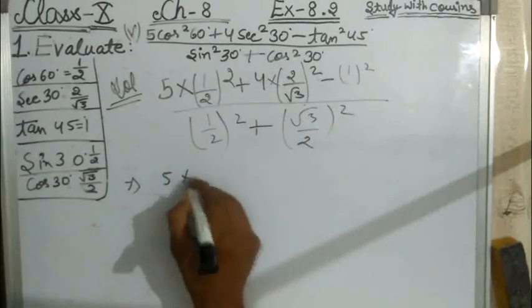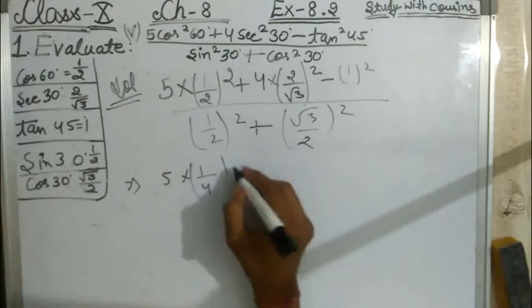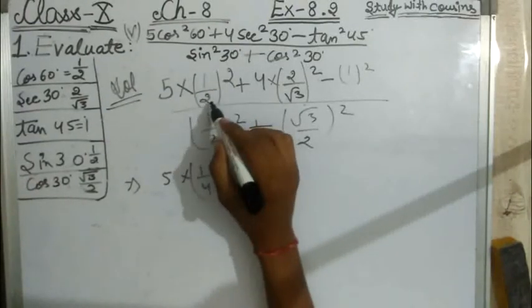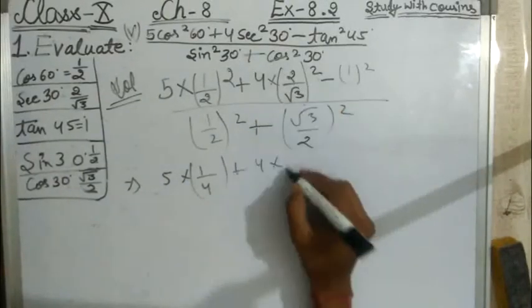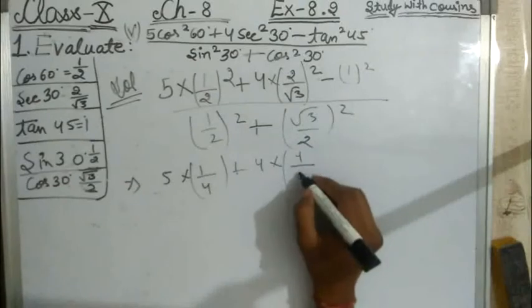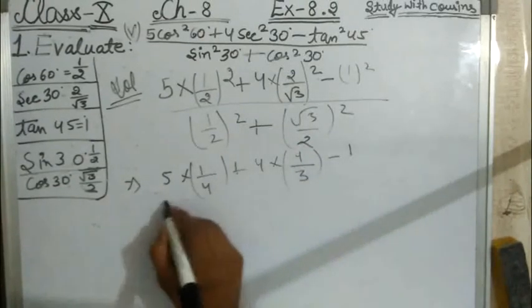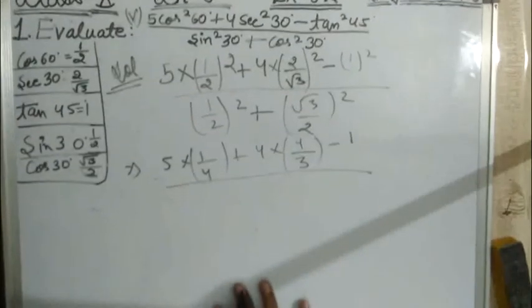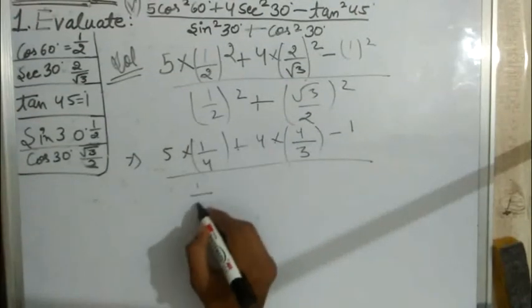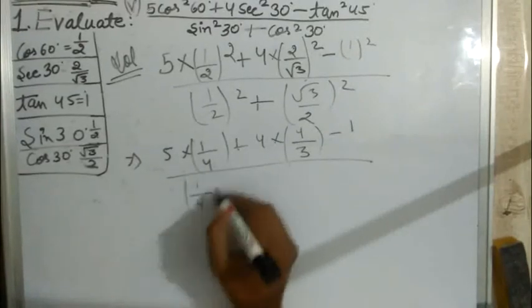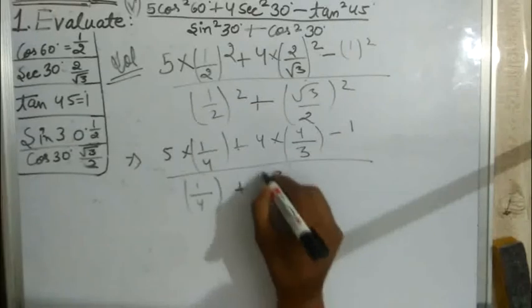5 into 1/4 plus 4 into 4/3 minus 1 upon 1/4 plus 1/4. Now,